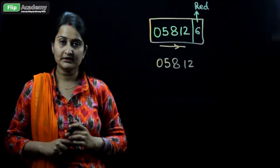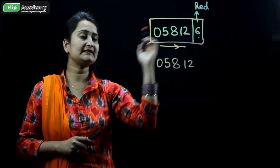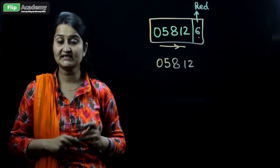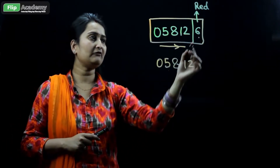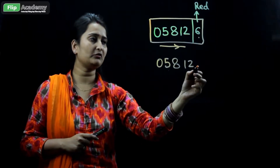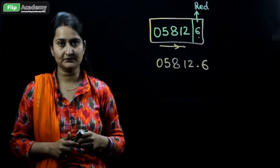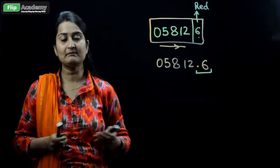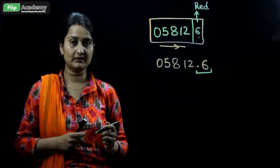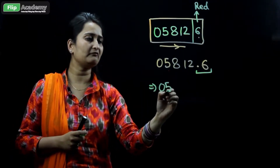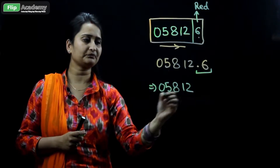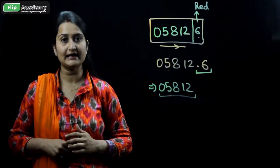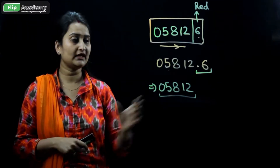You have to ignore the number 6, which is red in color. It generally shows the number after the decimal point — if you consider this red number, it would become 0.6. In your electricity bill, this 0.6 hardly matters, so we ignore this decimal number. The final reading is 05812. This is how we read the display of the electric meter.